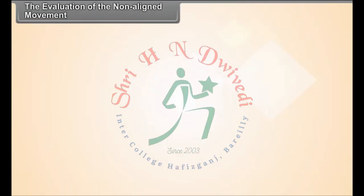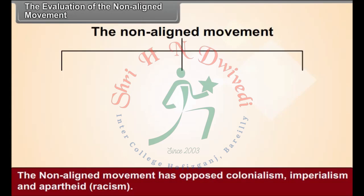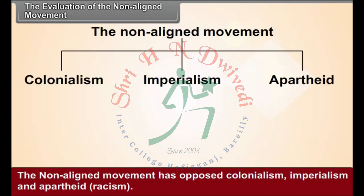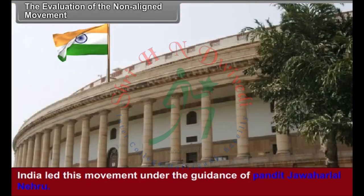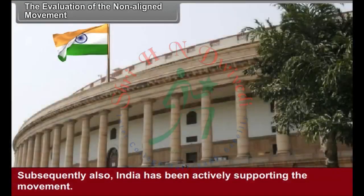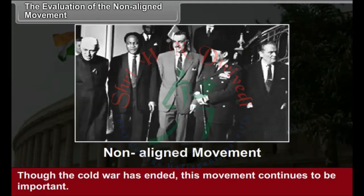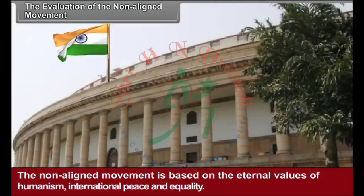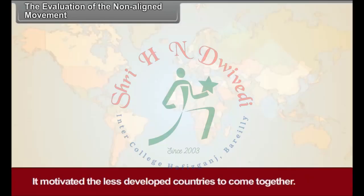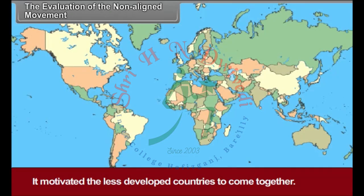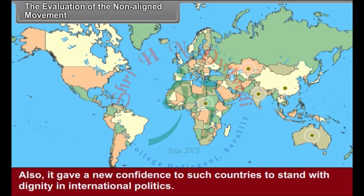The Evaluation of the Non-Aligned Movement: The Non-Aligned Movement has opposed colonialism, imperialism, apartheid, and racism. It has encouraged the use of peaceful methods in resolving international disputes. India led this movement under the guidance of Pandit Jawaharlal Nehru, and has continued to actively support the movement. Though the Cold War has ended, this movement continues to be important. The Non-Aligned Movement is based on the eternal values of humanism, international peace, and equality. It motivated less developed countries to come together and gave them a new confidence to stand with dignity in international politics.